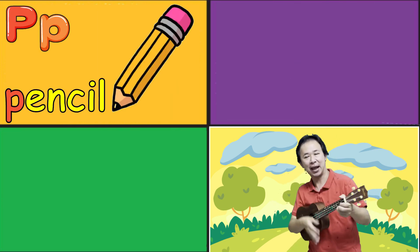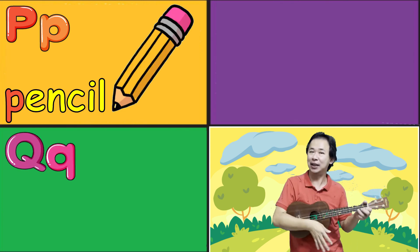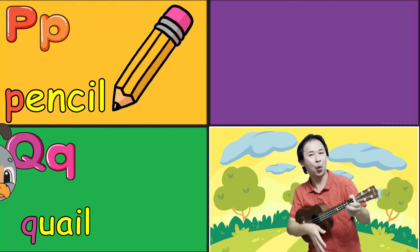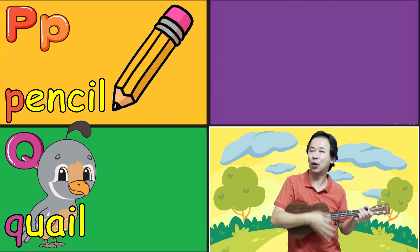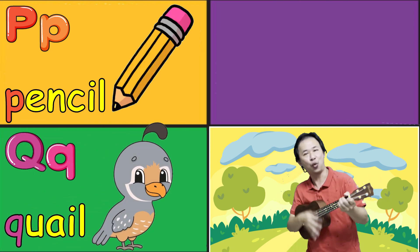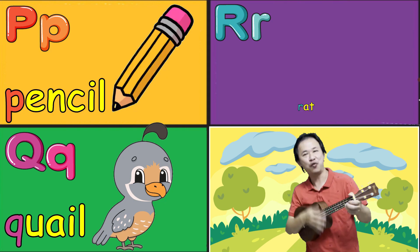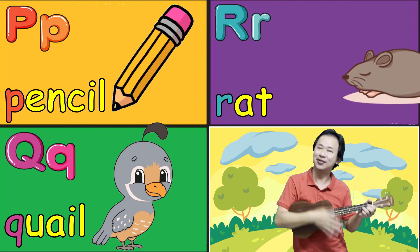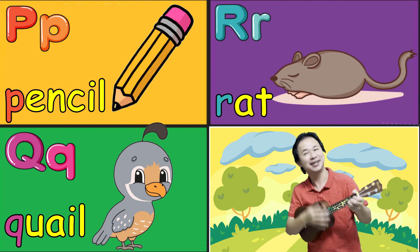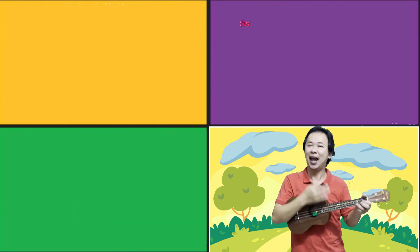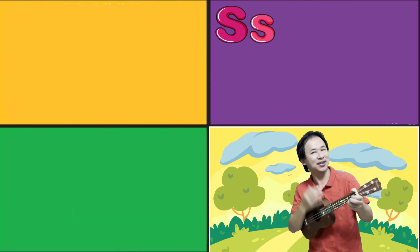Q is for quail, qu-qu-quail. R is for rat, r-r-rat. S is for sun, s-s-sun.